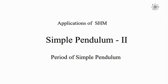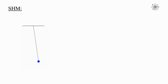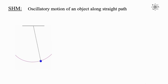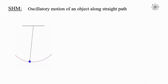Hello students. In a series of applications of simple harmonic motion, this is our second video based on the simple pendulum. In this video we are going to discuss the period of a simple pendulum. We know that the motion of the bob of a simple pendulum is part of a vertical circle. To find the period, the pendulum should perform simple harmonic motion. Oscillatory motion of an object along a straight path is known as simple harmonic motion.